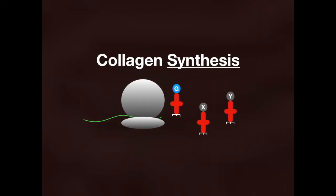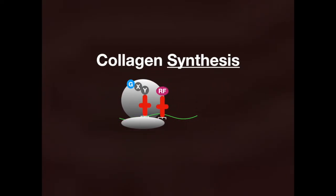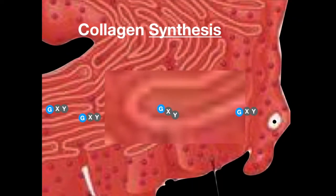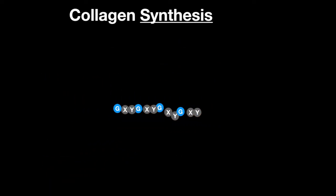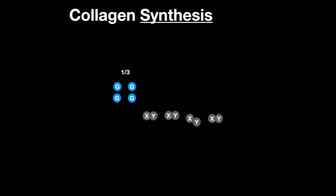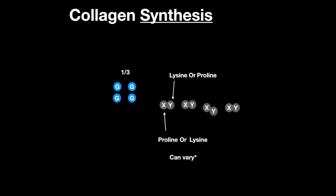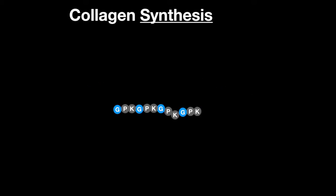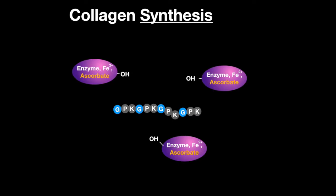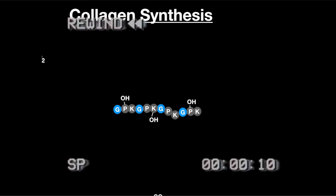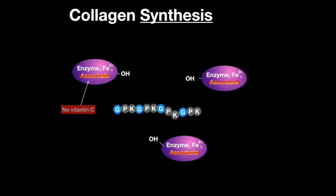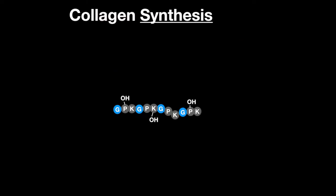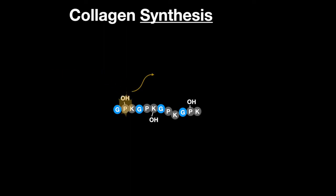Let's go over synthesis. The collagen peptide sequence is glycine-X-Y, and it is produced in the rough ER. Collagen is one-third glycine, and X and Y are proline or lysine, whose content can vary. Specific proline and lysine residues are then hydroxylated — a process that requires vitamin C. A lack of vitamin C will lead to scurvy. A hydroxyproline assay is a good candidate for collagen quantification because hydroxyproline can be found almost exclusively in collagen, and it can be reacted to produce a chromophore that can be quantified via absorbance.